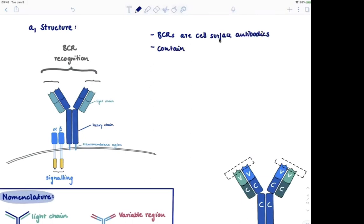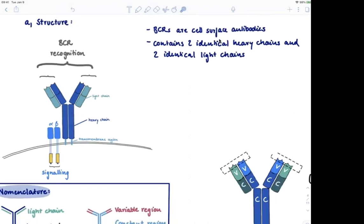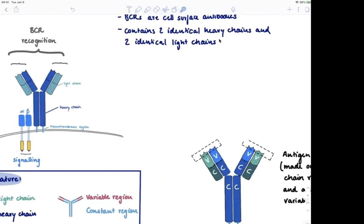And they contain two identical heavy chains and two light chains. So you can clearly see the heavy chain and then the light chain, which is just a shorter one, therefore light. And then we can split up the heavy chain and the light chain into a variable region and a constant region.